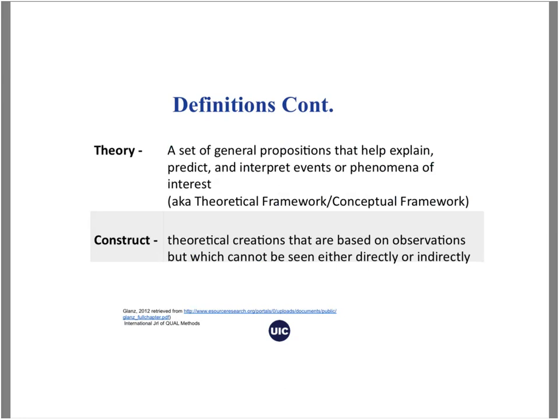I also want to distinguish two things you'll hear in these modules. A theory is a set of general propositions that help explain, predict, and interpret a phenomenon. When we use the word theory in qualitative research, you'll hear us talking about grounded theory — kinds of qualitative research that can actually build theory. A construct is a theoretical creation based on observations, which can't be seen either directly or indirectly. This is a lower level of thinking than a theory. We're usually trying to explore, unpack, or build an understanding about a particular construct — something like social capital, for example.